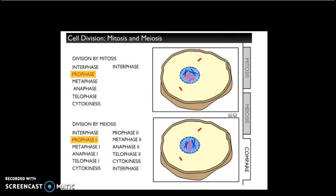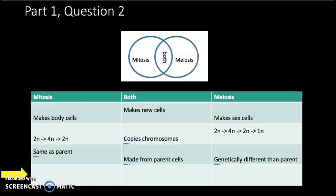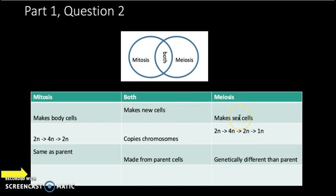Let's do a compare-contrast like you might do in English class — a Venn diagram. This side is only mitosis, that side is only meiosis, and the middle is both. Mitosis makes body cells; meiosis only makes sex cells like eggs and sperm. Both make new cells. Mitosis: your everyday nose cells have two copies of each chromosome, it makes four copies, then divides back to two. Meiosis starts with two copies, goes to four, then down to two, then to only one.